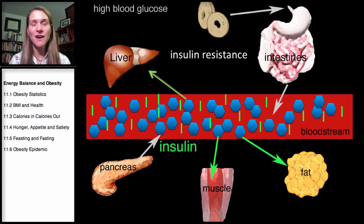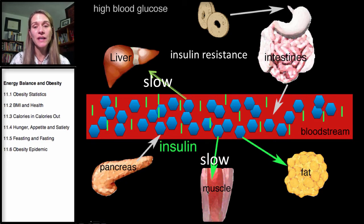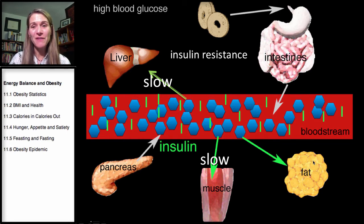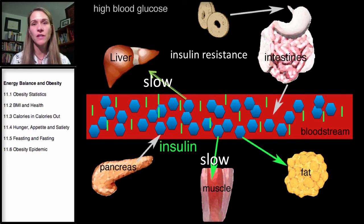When cells stop responding to insulin, glucose cannot be efficiently moved out of the bloodstream and into muscle. Insulin still promotes fat storage, so you end up with more fat storage but less glucose available to the muscle. The individual with insulin resistance doesn't have energy to exercise — they're consuming food but storing it as fat rather than utilizing it.